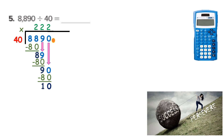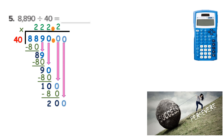Now what? Add a decimal, bring it up, add a 0, bring it down. Will 40 go into 100? It will — still 2 times. 2 times 40 is 80. I borrow from that 1 in front: I have 10 minus 8, giving 2. Still have a remainder, so I add another 0 and bring it down. Now I have 40 going into 200. Is it going to be 2 again? No — it's too big. 20 divided by 4 is the same as 200 divided by 40. That gives 5, and I now have no remainder. The answer is 222.25.